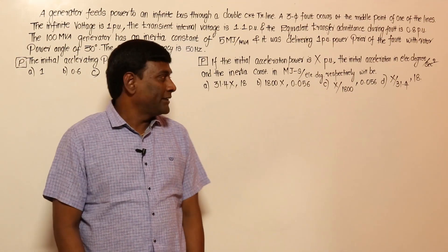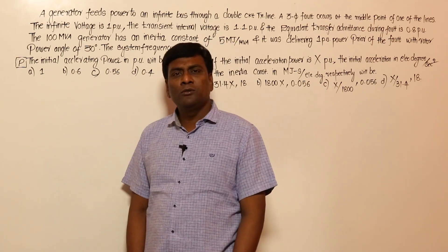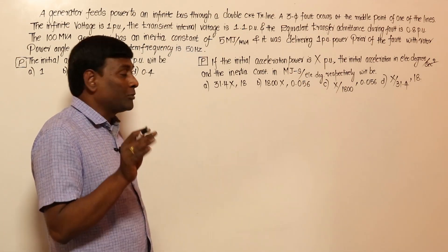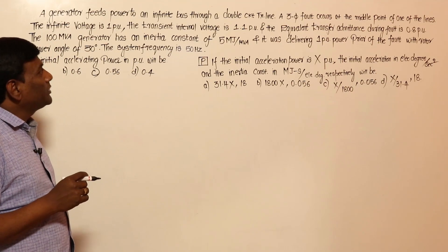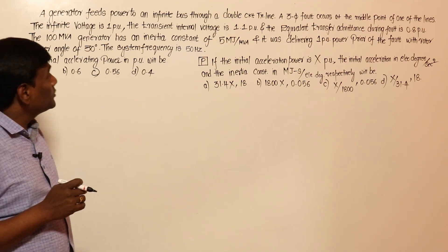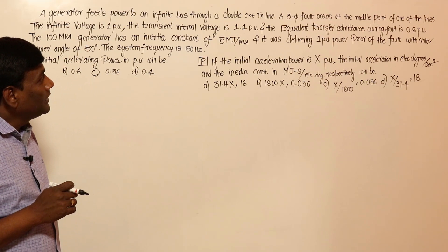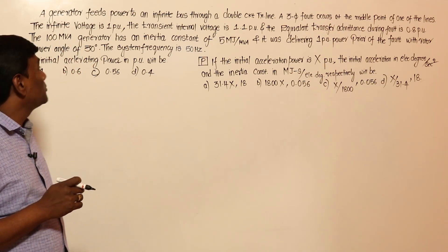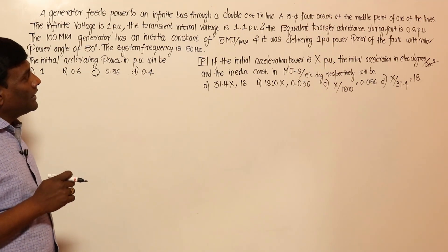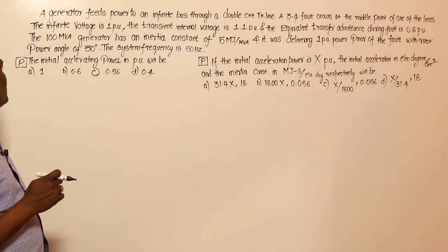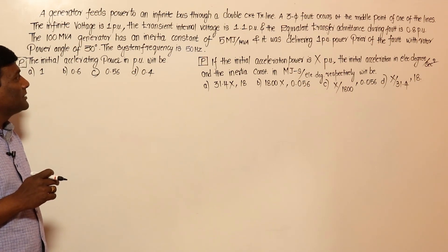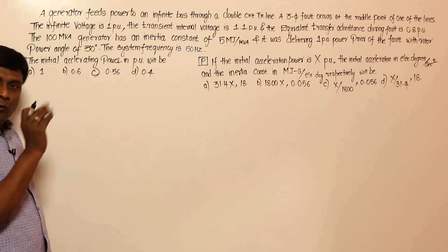This is a very beautiful question on stability from GATE. We got many emails about this question. A generator feeds power to an infinite bus through a double circuit transmission line. A three-phase fault occurs at the middle point of one of the lines. The infinite bus voltage is 1 per unit, the transient internal voltage is 1.1 per unit, and the equivalent transfer admittance during fault is 0.8 per unit. The 100 MVA generator has an inertia constant of 5 mega joules per MVA, delivering 1 per unit power prior to fault with rotor power angle of 30 degrees. System frequency is 50 Hz. They are asking: what is the initial acceleration power in per unit?